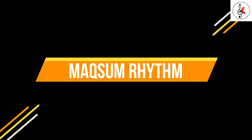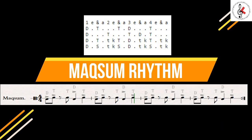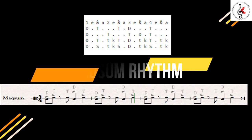Maksum is one of the most common and versatile rhythms in Middle Eastern music. Its pattern is a repeating sequence of 4/4 beats, with a strong emphasis on the second beat. It is often heard in various genres, including traditional folk music and belly dance routines.